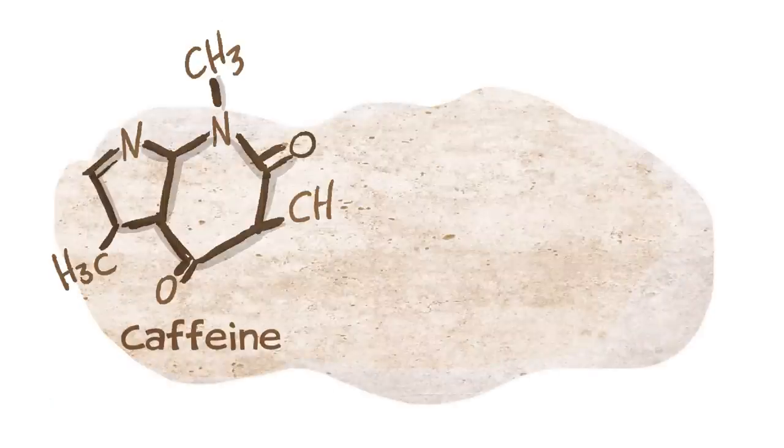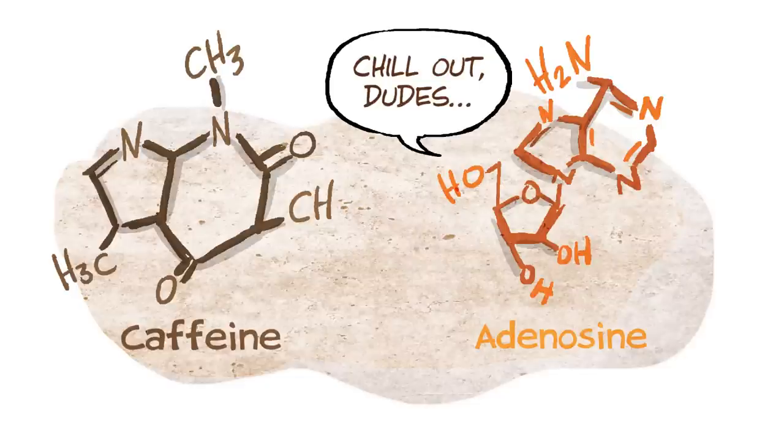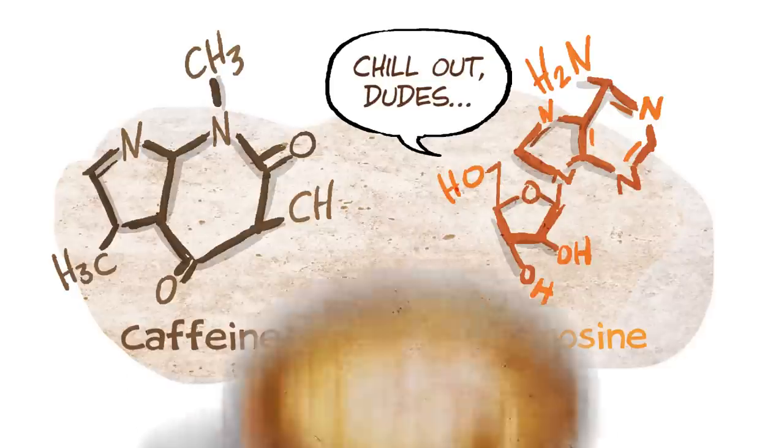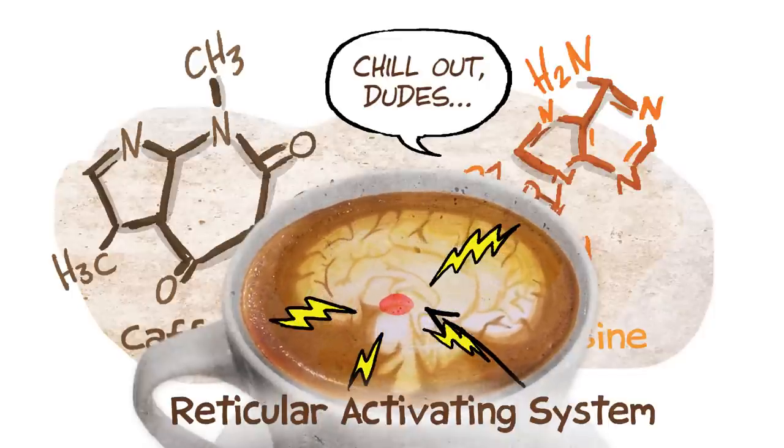Caffeine works by blocking another chemical in your brain called adenosine from bonding to receptors on your neurons. Adenosine is an inhibitor that keeps many brain regions in check, including one called the reticular activating system, which basically amplifies brain activity.